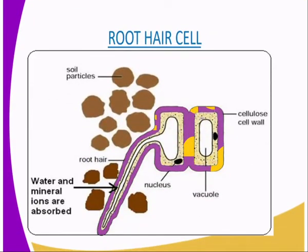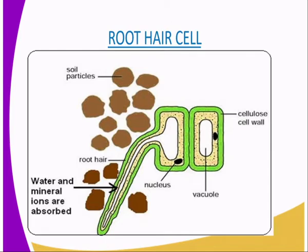The first specialized cell we are going to deal with is the root hair cell. We are first dealing with the specialized plant cells. So the first specialized plant cell we are going to look at is the root hair cell. The root hair cell is specialized in a manner whereby it is able to absorb water from the ground.